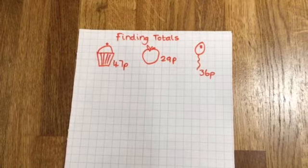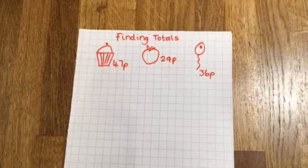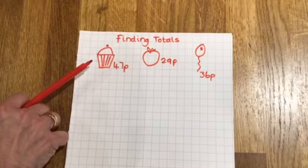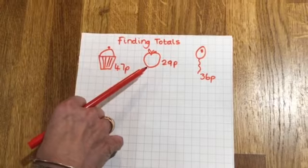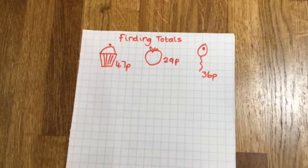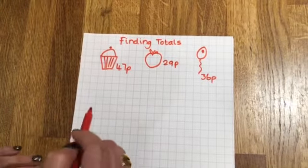So let's have an example here. I'm off to the shops and I'm going to buy a cupcake and an apple. Cupcakes cost 47p and the apple is 29p. So let's see how much they cost in total, how much they cost altogether.